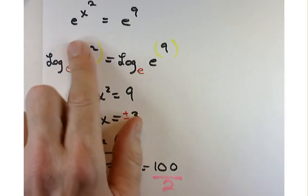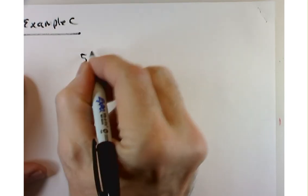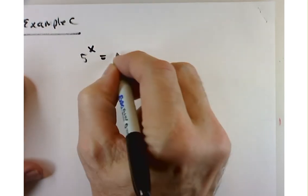Our little trick worked out great for the last couple examples where we were able to take the log of the matching base on both sides. But you're going to run into a brick wall with example C. Five to the x equals four to the x plus 1.